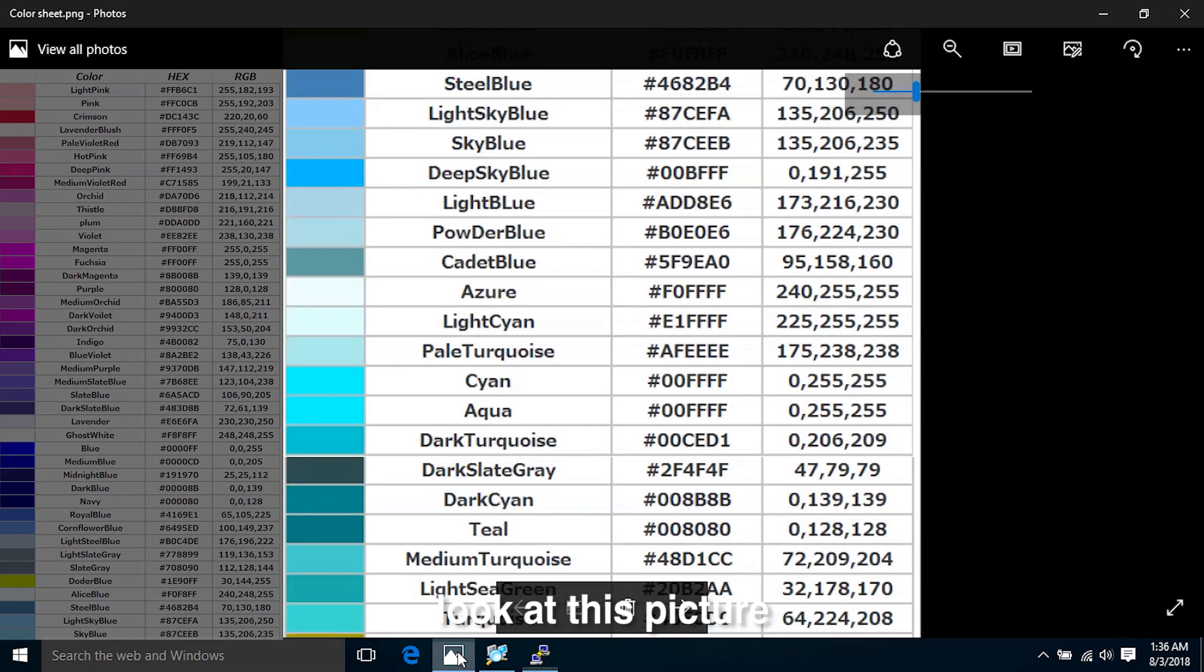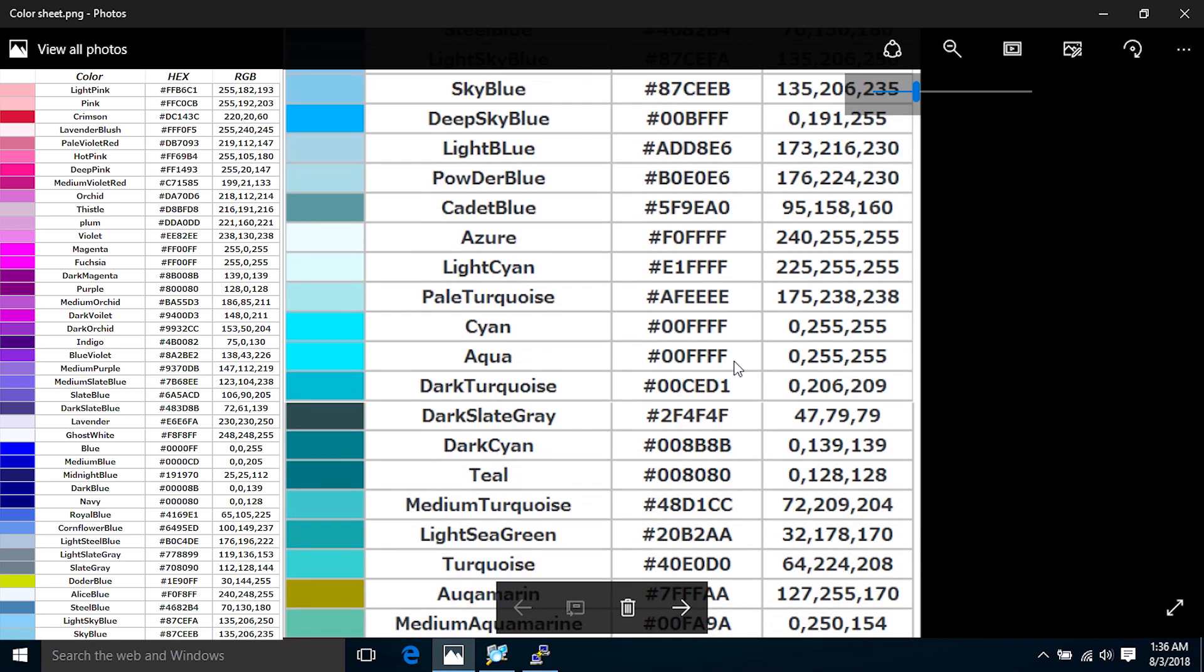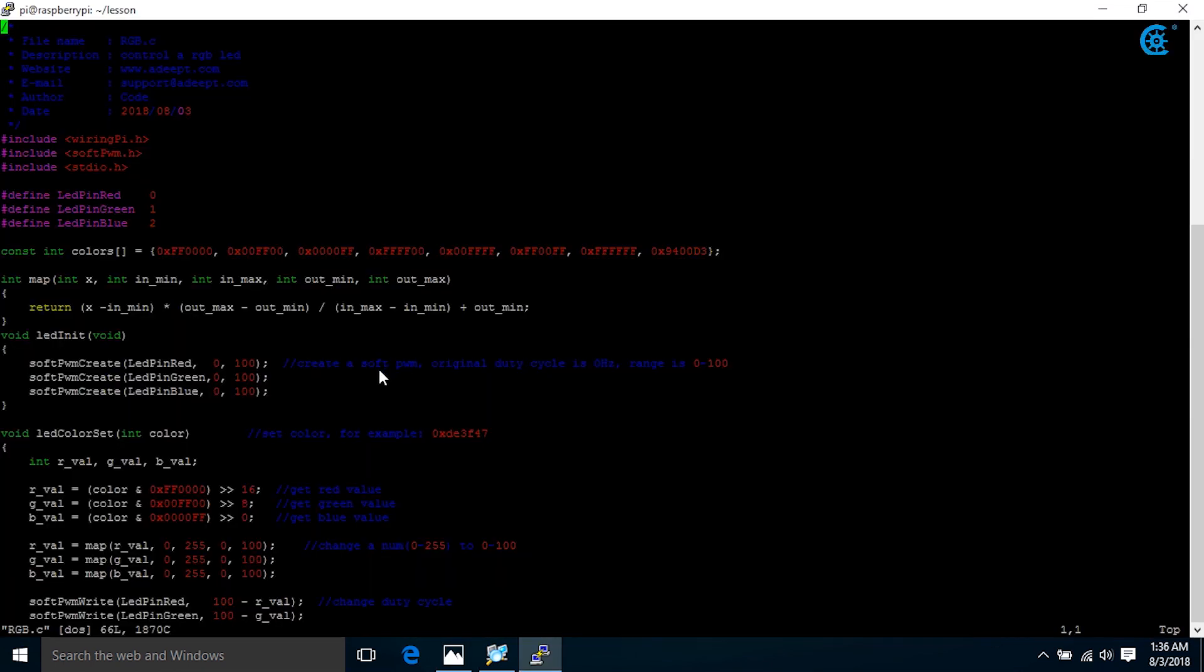Look at this picture. It's the hexadecimal color code. Then create a soft PWM, original duty cycle, get red, green, blue value, and change duty cycle.